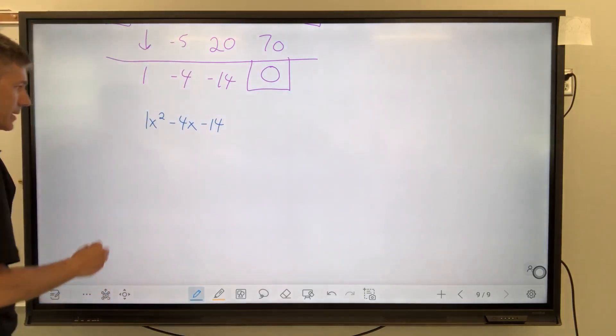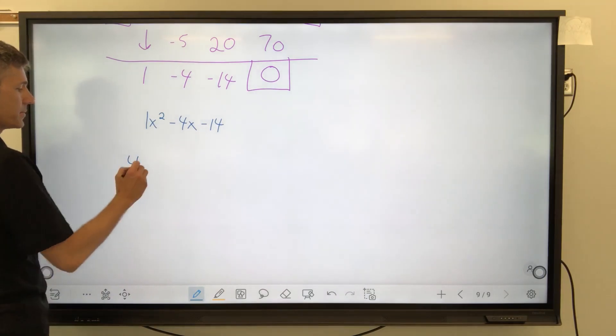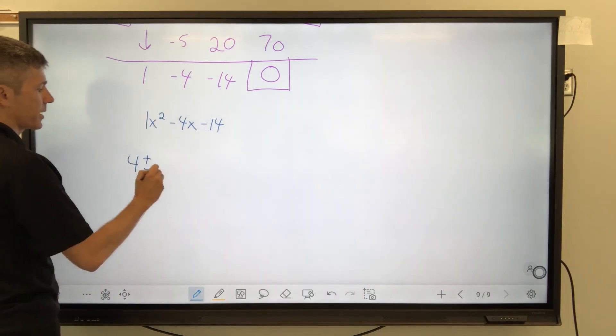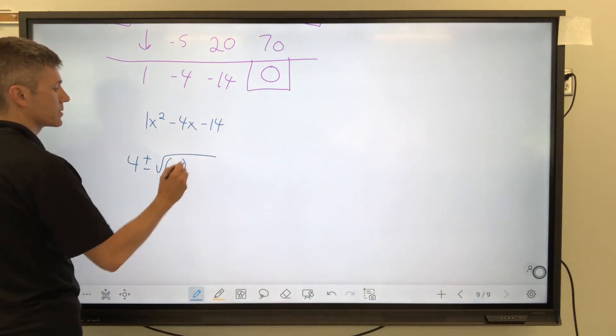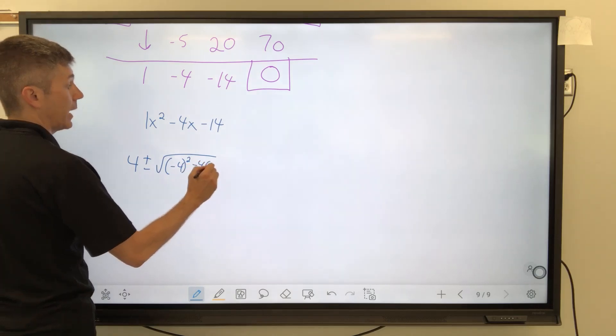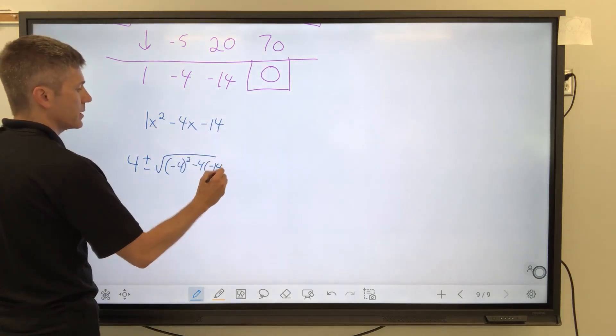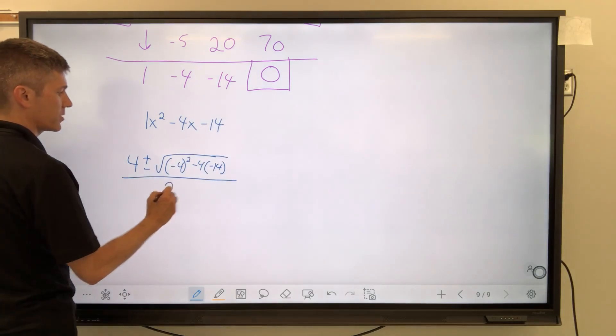Permission not to write negative b plus or minus the square root of b squared minus 4ac all divided by 2a. I said it so fast. I was like, did I say it right? Negative b, opposite of that, plus or minus the square root of b squared minus 4a is 1c, negative 14, all divided by 2a.